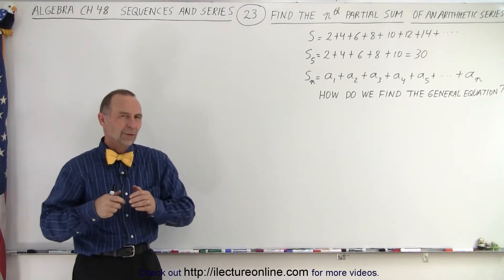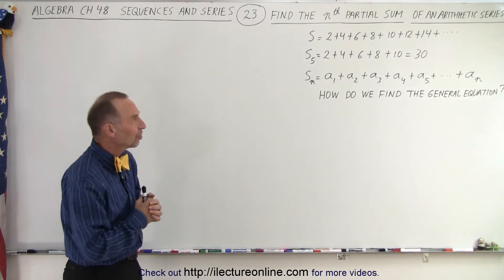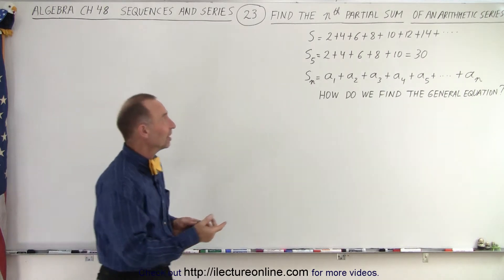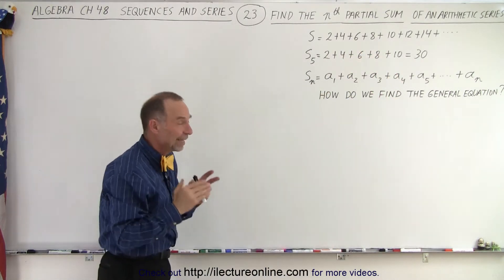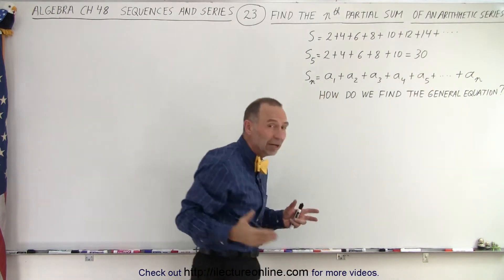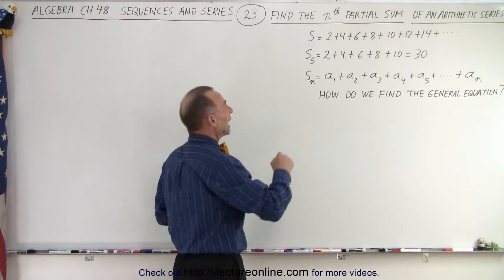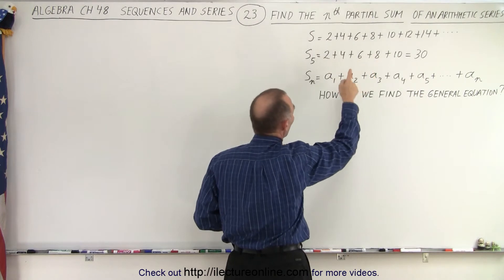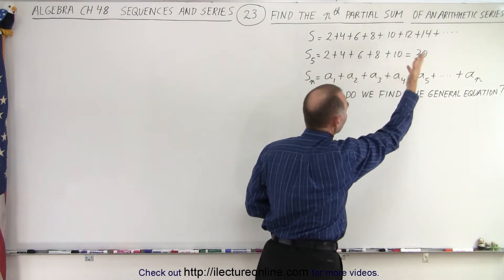Welcome to our lecture. Here we're trying to find what we call the nth partial sum of an arithmetic series — a series where the difference between the numbers being added is always the same. We have an example: 2 plus 4 plus 6 plus 8 plus 10, where the difference between any two consecutive numbers is always 2. The fifth partial sum, S sub 5, is the sum of the first five terms: 2+4+6+8+10, which equals 30.